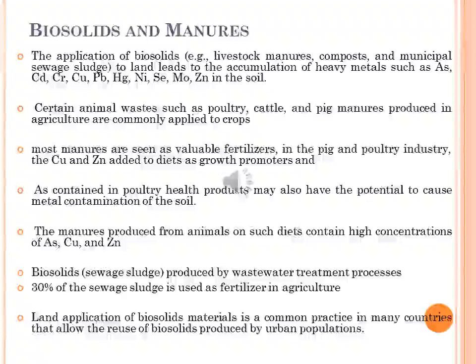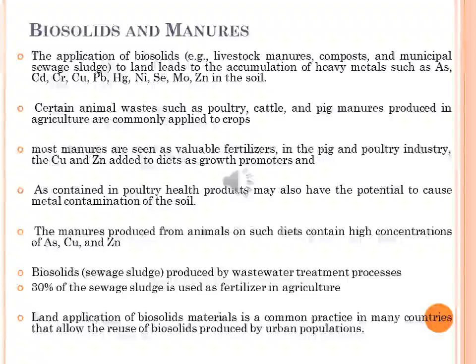Although most manures are seen as valuable fertilizers, in the pig and poultry industry the copper and zinc added to the diet as growth promoters, and arsenic contained in poultry health products, may also have potential to cause metal contamination of the soil. The manure produced from animals on such diets contains high concentrations of arsenic, copper and zinc, and if applied to restricted areas of land, can cause buildup of these metals in the soil in the long run.